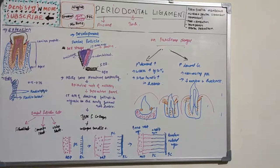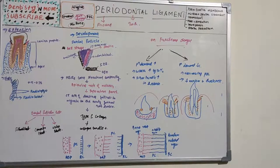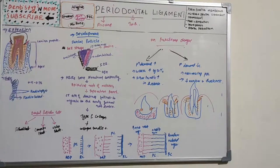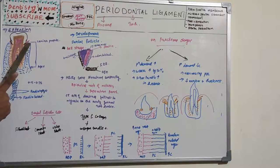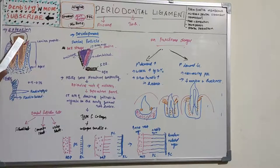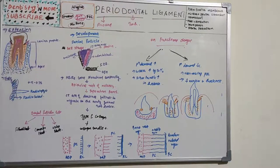Now let's see the extension of the periodontal membrane. In the coronal direction, it is continuous with the lamina propria of gingiva — the connective tissue part of gingiva covered in the gingival session. On the coronal side it is continuous with lamina propria, and it is demarcated by the alveolar crest fiber.